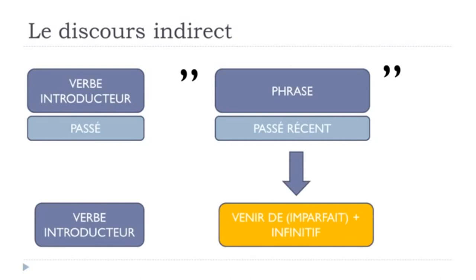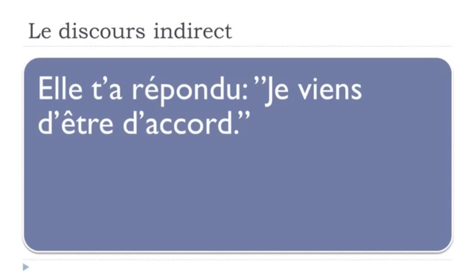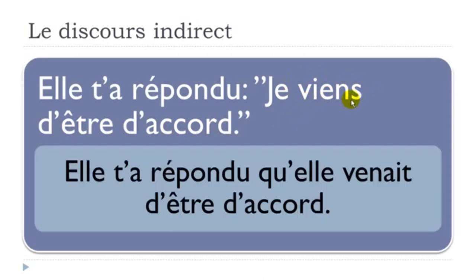Finally, if the second part has the passé récent — constructed with venir de at the present — the verb venir also moves to the imparfait. Example: elle t'a répondu, je viens d'être d'accord. Venir goes to the imparfait: elle t'a répondu qu'elle venait d'être d'accord. Don't forget the preposition de and the infinitive after.